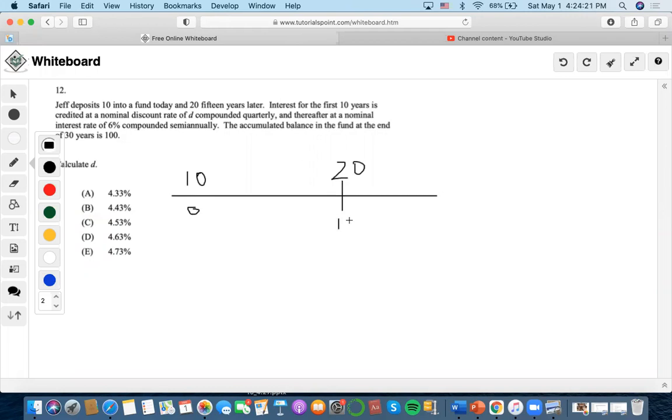Interest for the first 10 years is credited at a nominal discount rate compounded quarterly. We take the initial deposit of 10 and multiply it by 1 minus D/4. Since we're using a discount rate and accumulating, we make the exponent negative.